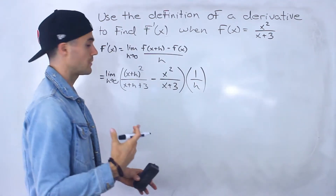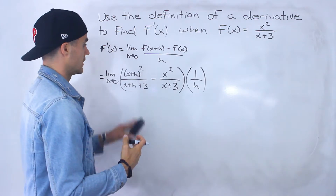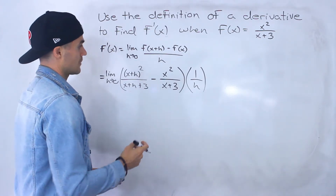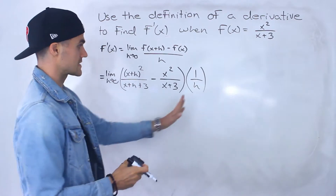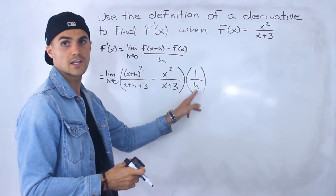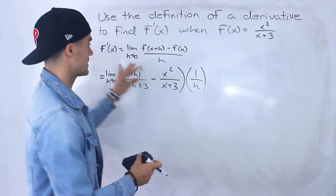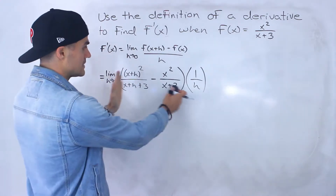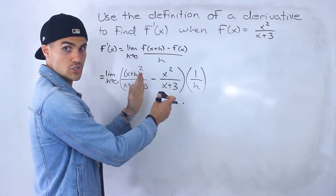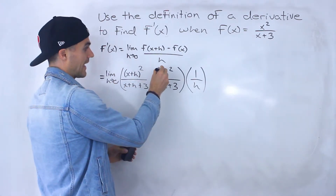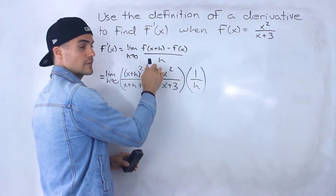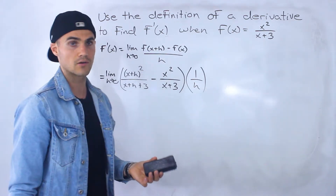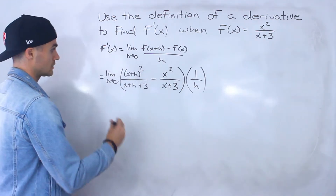I just like to do it that way — it helps me organize everything better. So what I want to try to do is get rid of this h here, and the way I can do it is if I combine these into one fraction and get an h by itself in the numerator, then that h and this h can cancel out, and then we can plug in 0 for h.